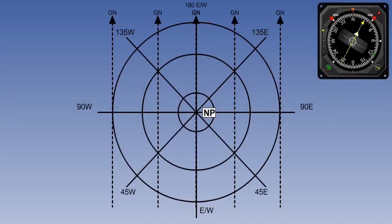Now that we can convert from true to grid on the chart, we need to find a method of steering grid direction. This can be done using either a compass or a gyro, as we shall see in the next lesson.